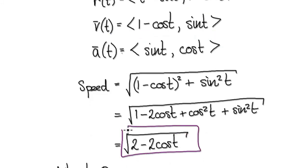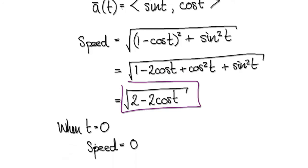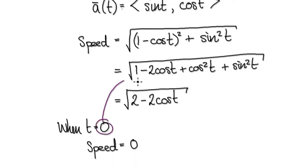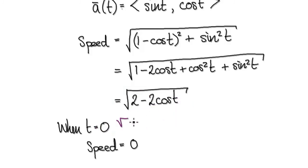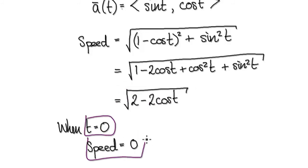If you look at the speed when t equals 0, put zero into t: cos of zero is one, two times one is two, so you have two take away two which is zero. The square root of zero is zero. So when t equals 0, the speed is zero.